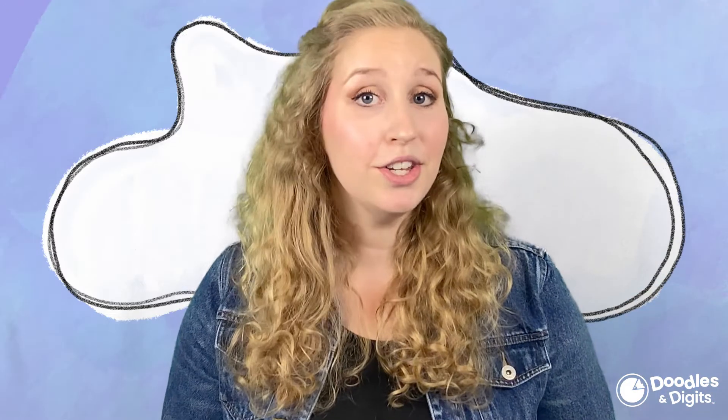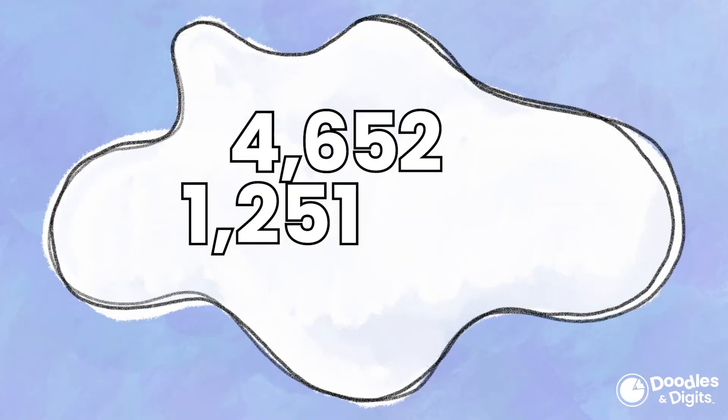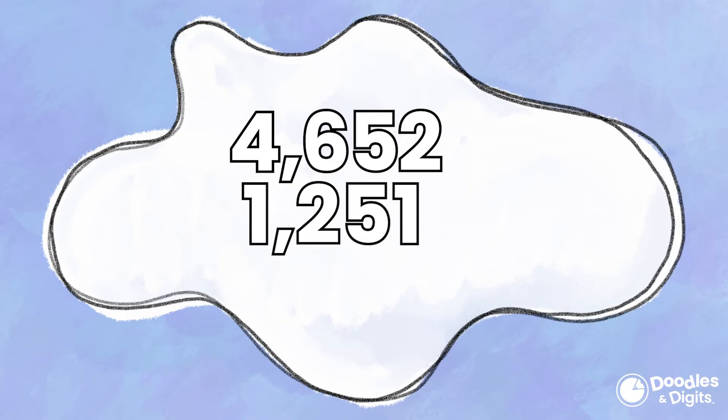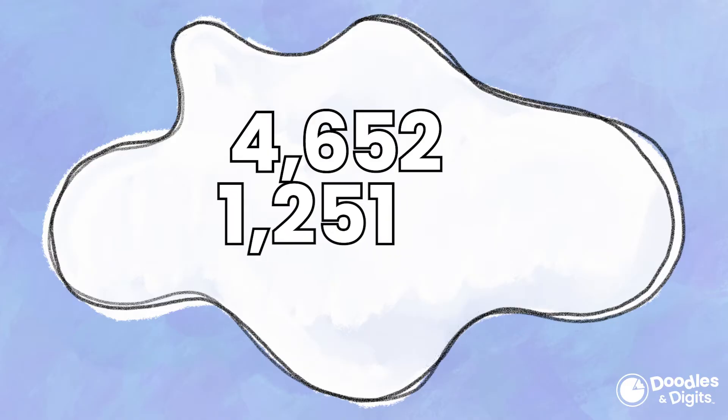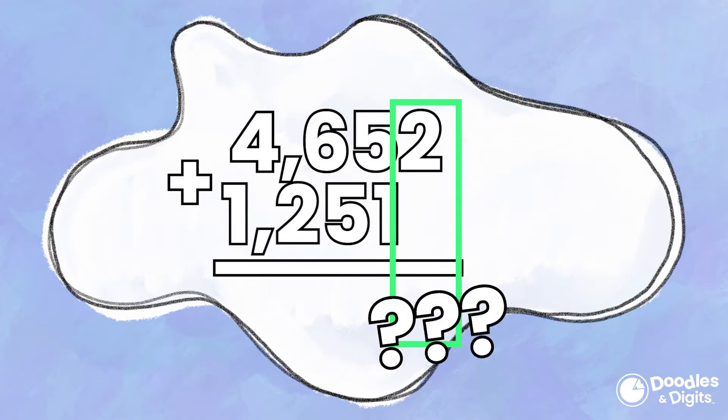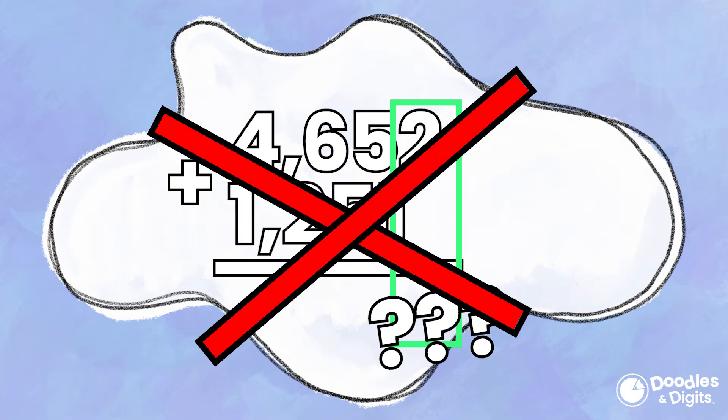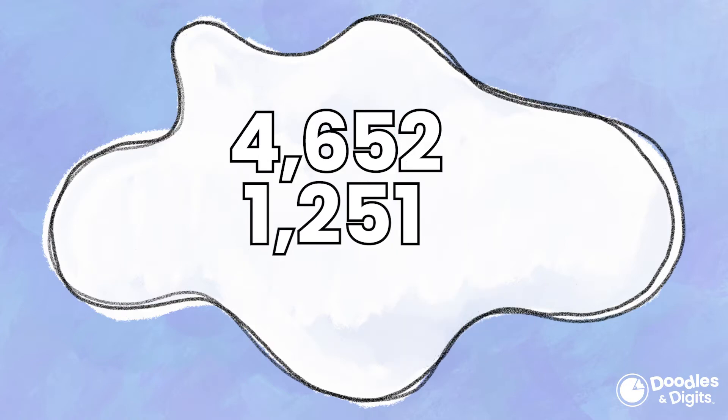So when you're using the standard addition algorithm, why is it so important to line the numbers up? Let's look at this problem here. If we weren't going to line this up, then when we start in the ones place, the two won't have anything to add with. We want to make sure that we are adding each place value. So the ones with the ones, the tens with the tens, the hundreds with the hundreds, and the thousands with the thousands. So that's why it is so important that you line it up so that you are correctly adding the right place value.